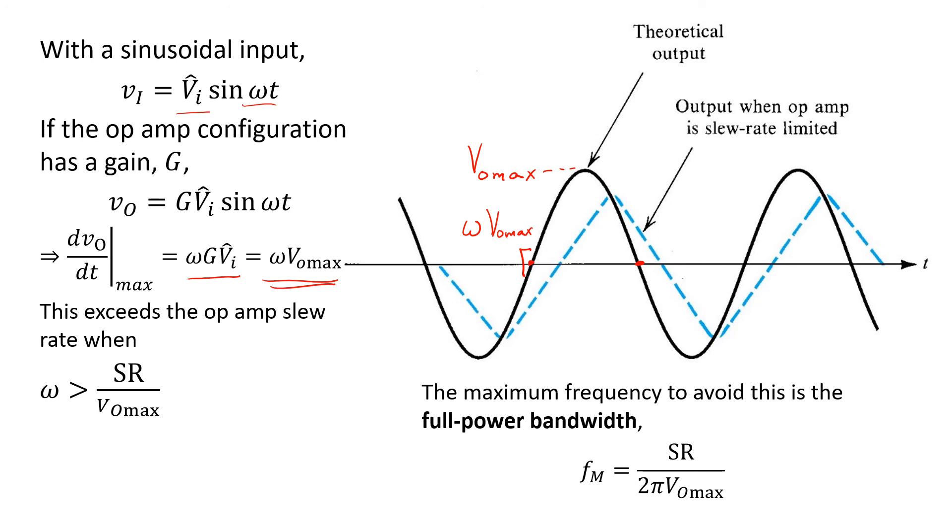Instead, you're likely to get something like this blue waveform shown here, where the output simply ramps up and down at the constant slew rate limit of the op-amp itself. If we want to avoid this situation, we have to ensure that the frequency of the sinusoid and output amplitude of the sinusoid observe this limit that's imposed by the op-amp slew rate. This upper limit on the frequency that the op-amp circuit can handle is referred to as the full power bandwidth of the configuration. Obviously, it depends on the slew rate of the op-amp and the amplitude of the sinusoid at the output of the op-amp circuit. It's called the full power bandwidth because clearly beyond this frequency, we see that the output waveform is not reaching its full output level VO max that we would expect under ideal circumstances.